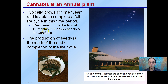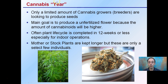A year is not 12 months or 365 days, especially for cannabis. The production of seeds is the marker for the end of a life cycle completion, so we're able to grow cannabis in much less time than 12 months. The annual plant year is marked by seed production. However, only a limited number of cannabis growers or breeders are looking to produce seeds. By some definitions, that final bud contains no seeds, but that is still the end of that particular life cycle.